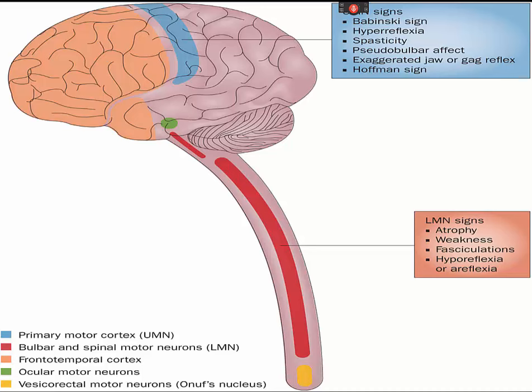The somatic nervous system will head to the skeletal muscles, while the autonomic nervous system will go to the smooth muscle, cardiac muscle, and glands.